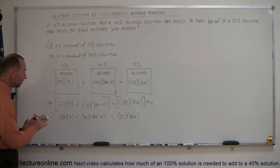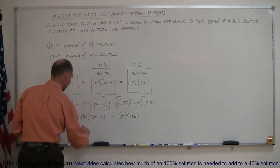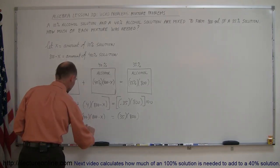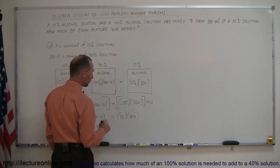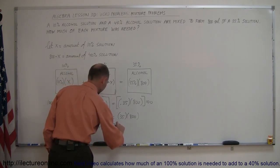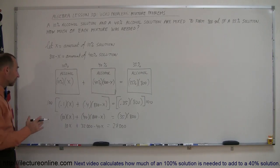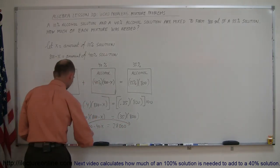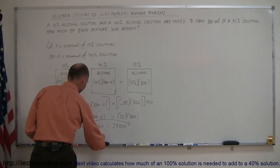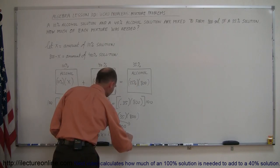Next, multiply everything out to remove parentheses: 10x + 40 × 800 = 32,000, so we get 10x + 32,000 − 40x = 28,000. Then move all numbers to the right side, giving 10x − 40x = 28,000 − 32,000.